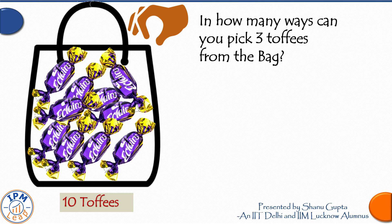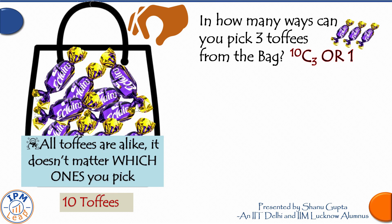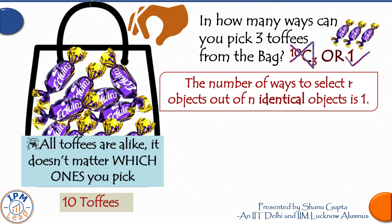Let's begin with a simpler case. Consider that you have a bag full of toffees — 10 Cadbury Eclairs in total — and someone offers you to have as many as you like. Can you tell me in how many ways can you pick three toffees from the bag? Is your answer 10C3, or is it 1? The logic is simple: your selection of three toffees will always look the same no matter which ones you pick. So the answer is 1. The number of ways to select r objects out of n identical objects is always 1.